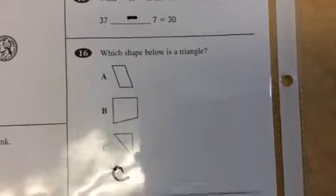Which shape below is a triangle? Well, that's not hard to know. See, right? It's a rectangle, rhombus, and a triangle.